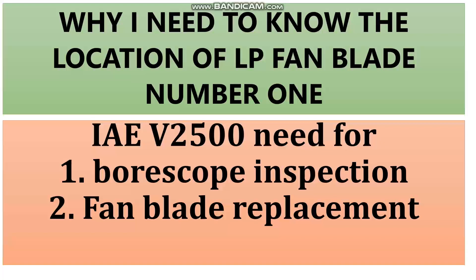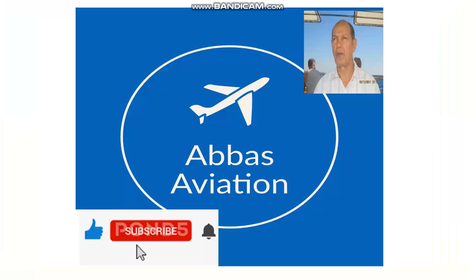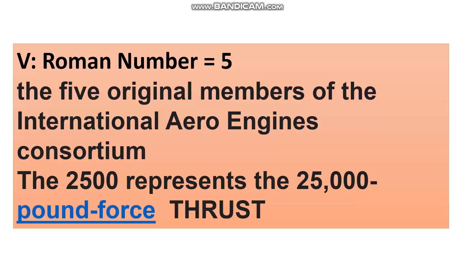Fan blade replacement is a serious subject because of vibration — you must take care of the engine vibration to avoid problems. Please like, subscribe, and ring the bell to continue with new videos. Here is some information about the V2500: 'V' means the Roman numeral five, representing the five original companies of the International Aero Engines construction consortium.